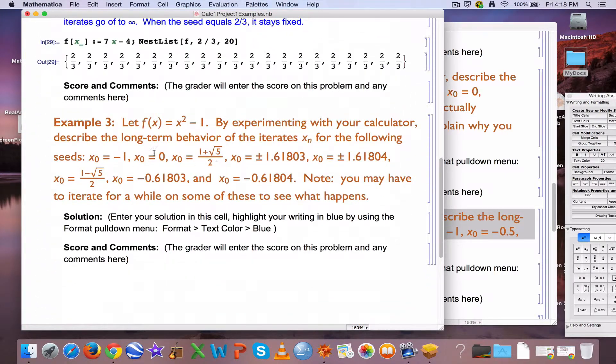All right, here's our new example for this video, example 3. The function is f(x) = x² - 1. I would encourage you to go ahead and experiment on your calculator. The behavior of the iterates for the following seeds. More seeds here to consider. Note, you may have to iterate for a while for some of these to see what happens. Some of these don't change very much right away.